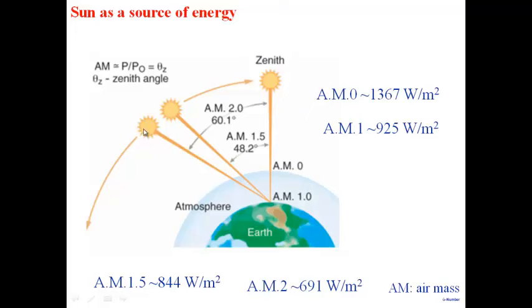How much radiation is available on Earth's surface depends on the angle at which sunlight arrives. The standard people use is AM 1.5, arriving at an angle of 48.2 degrees. AM refers to air mass. AM 0 is the intensity outside Earth's atmosphere — 1367 watts per meter square. AM 1.0, going vertically through the atmosphere, gives 925 watts per meter square at Earth's surface.